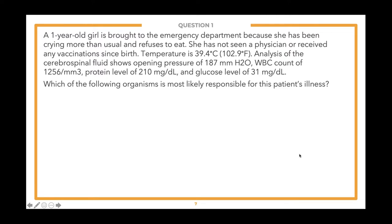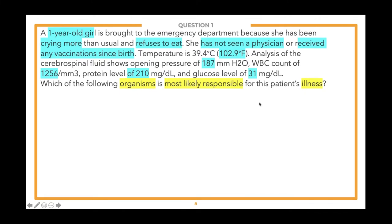Let's take a look at the vignette. A one-year-old girl is brought to the emergency department because she has been crying more than usual and refuses to eat. She has not seen a physician or received any vaccinations since birth. Temperature is 39.4°C (102.9°F). Analysis of the cerebrospinal fluid shows opening pressure of 187, white blood cell count of 1256, protein level of 210, and glucose level of 31.